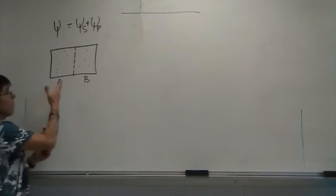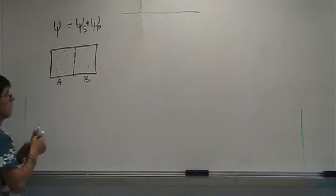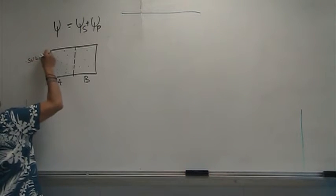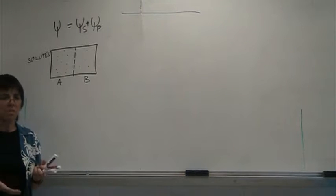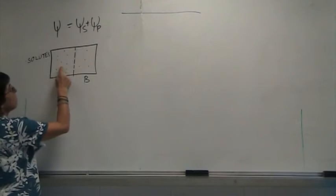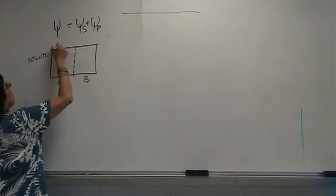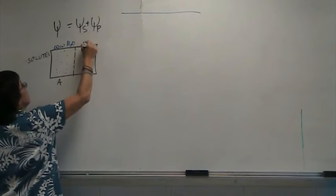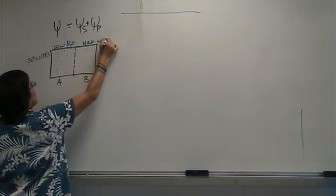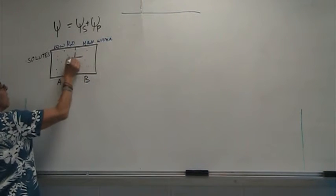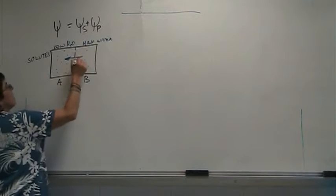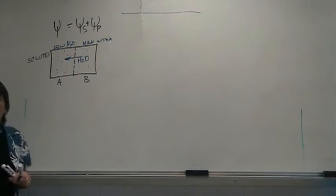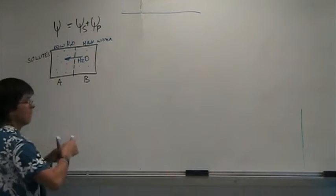If I ask you which way water is going to move: side A has high solute, meaning low water potential; side B has low solute, meaning high water potential. So this side is high water potential, and you correctly said water is going to move from B toward A — from high water potential to low water potential.